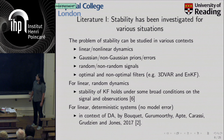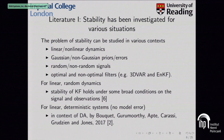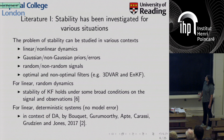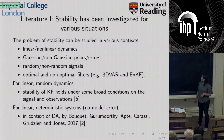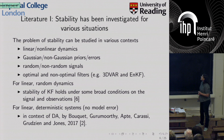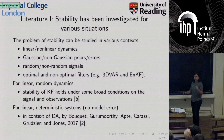For linear random dynamics it has been known for quite a while that the Kalman filter is stable under some broad conditions on the observations and the signal. For linear deterministic systems in the context of data assimilation, there is a paper by Bouquet, Gurumurthy, Apte, Karassi, Grigion and Jones in 2017, showing that the sequence of error covariances forgets the initial error covariance, under the condition that you observe the unstable and neutral subspaces.